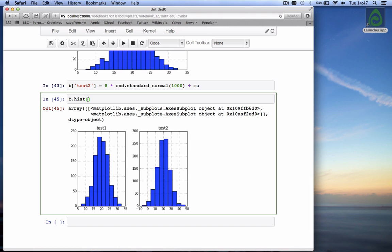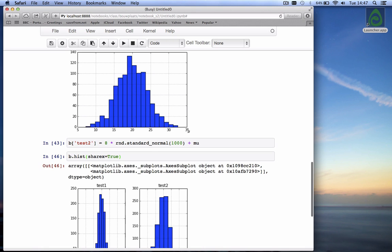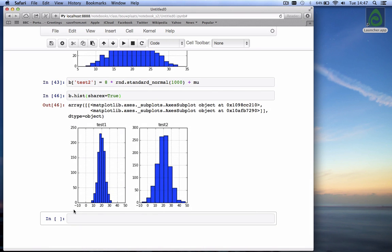And if you want to compare them, it would be nice if they used the same horizontal axis. So if we define the sharex axis equal to true, a keyword argument. Both x-axis now go from minus 10 to 50. And you see for test one, we've drawn from a normal distribution with mean 20 and standard deviation 4. We get this histogram. For test two, we've drawn from a normal distribution with mean 20 and standard deviation 8. So we get a much wider distribution. And we get that histogram.